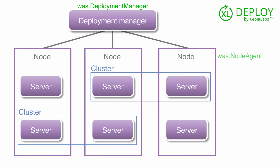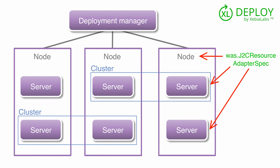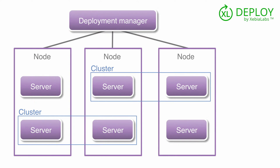Nodes are defined as waz.nodeAgent configuration items. Servers are defined as waz.managedServer configuration items. And clusters use the waz.cluster configuration item type. Resource configurations that should be deployed to nodes, clusters, and servers are also stored in configuration items. There are many different configuration item types available for resources — one example is waz.j2cResourceAdapterSpec. Excel Deploy copies artifacts, such as EAR files, to clusters and servers. The configuration item type for EAR files is waz.ear.